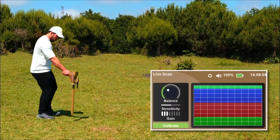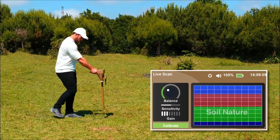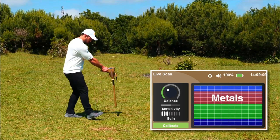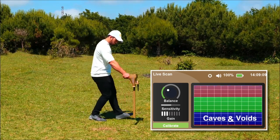Where the green color appears and symbolizes the soil nature, the red color symbolizes metals and the blue color symbolizes caves and voids.